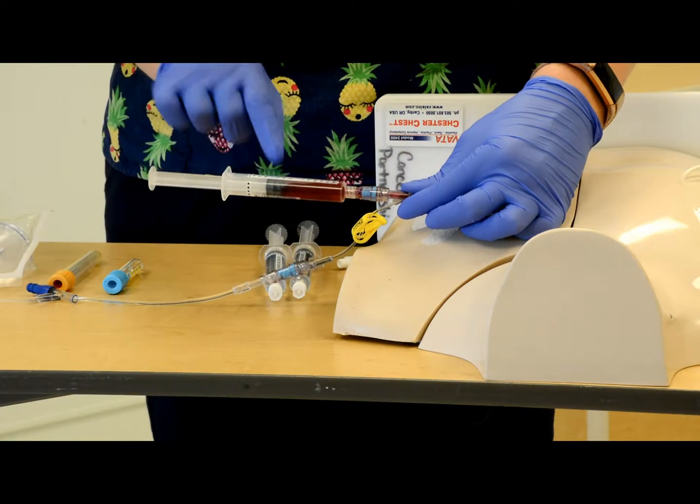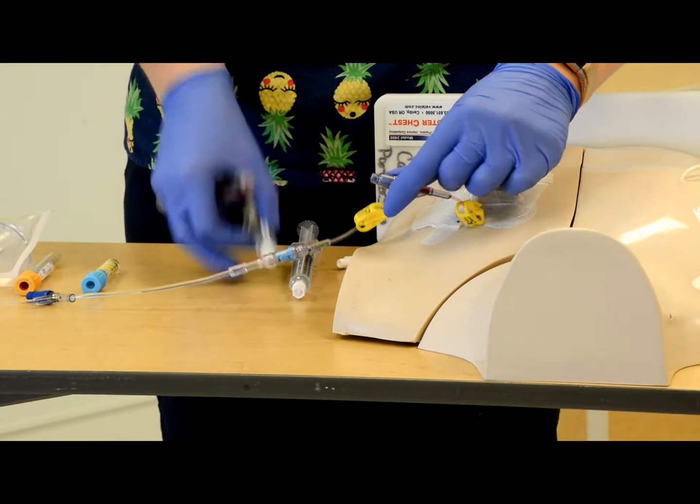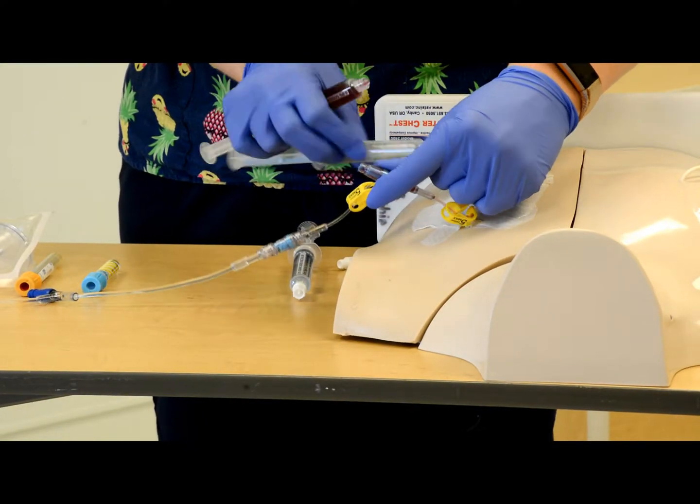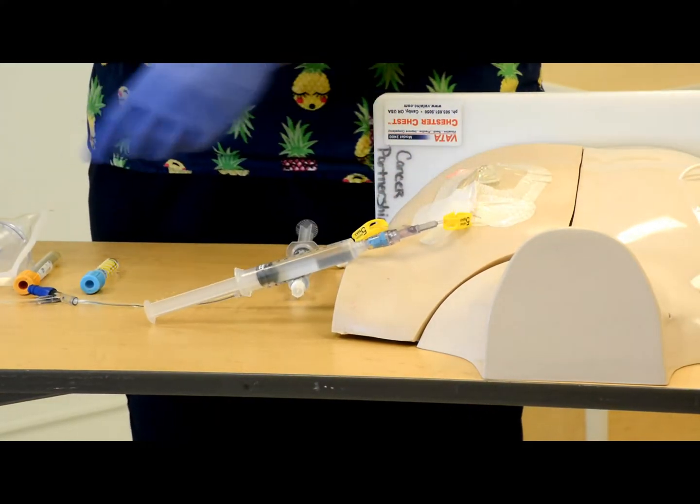Now that I've got my appropriate volume of blood for my tubes, I'm going to unhook this. And I like to put my saline on right away, so I don't have to re-scrub the hub, and just give it a little flush to immediately clear the line.